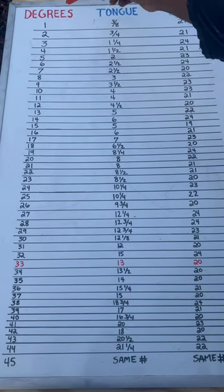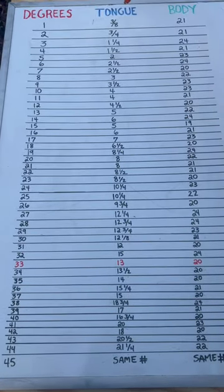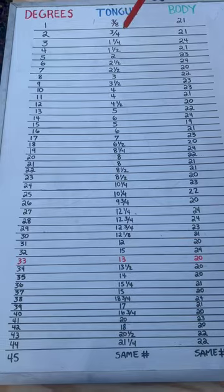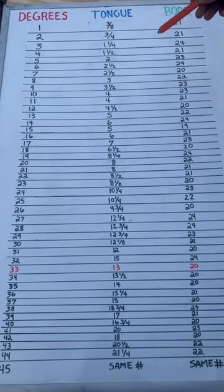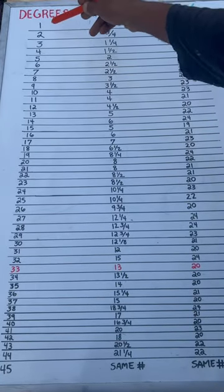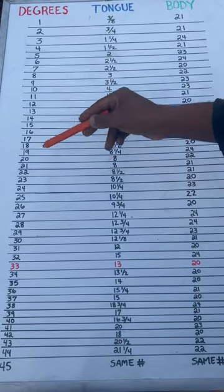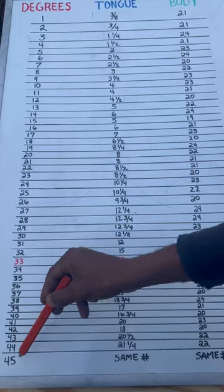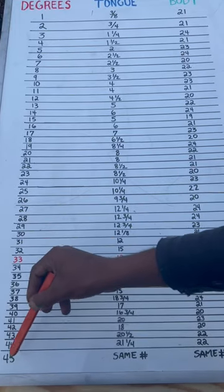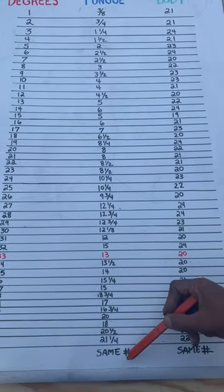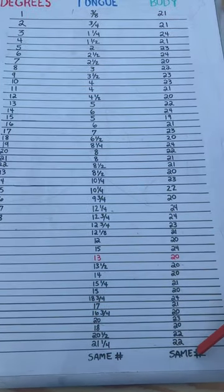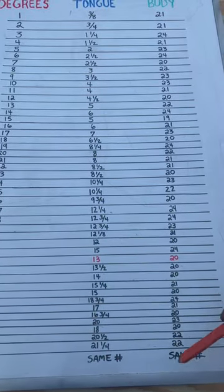Now look, I got three columns right here — one for my degrees, one for my tongue length, and one for my body length, for my blade length. The chart goes from 1 down to 45. Look at my 45-degree angle: I got the same number for your tongue, and you're going to need that same number for your body. That's what that means.